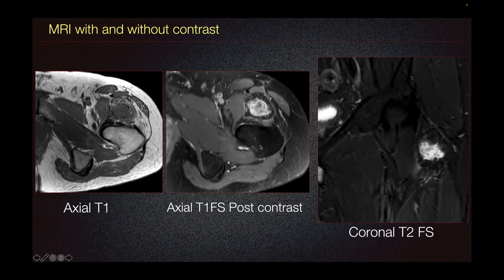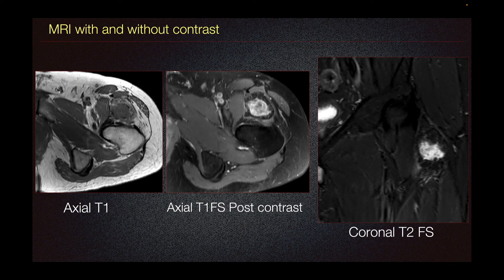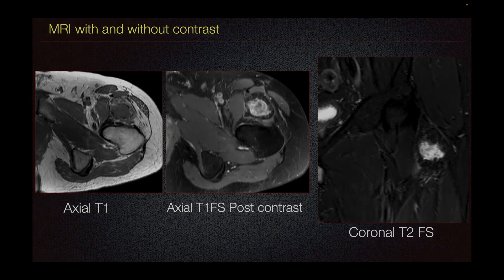The periphery has the same signal as the bone, which is also seen on coronal T2 fat sat imaging, where the mature bone suppresses on fat-suppressed imaging. This is a typical appearance of myositis ossificans in its later stages, where it can mimic bone. The ossification starts from the periphery and progresses centrally as it matures and becomes completely ossified.